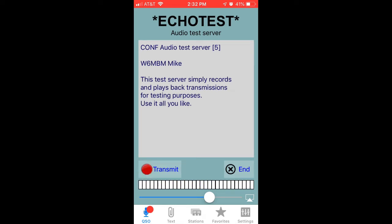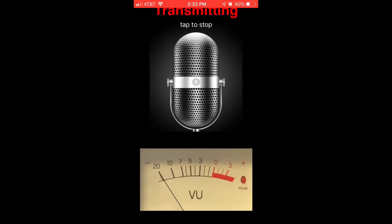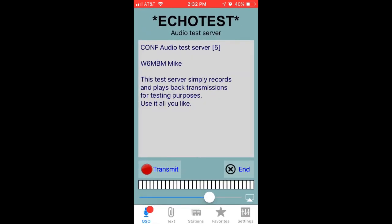Now we see the transmit button on the lower left. I'm going to tap that, and as you can see, I'm now transmitting. This is a test of the Echolink playback system. I tap the screen again anywhere to stop the transmission. And now we hear the playback: 'This is a test of the Echolink playback system.'